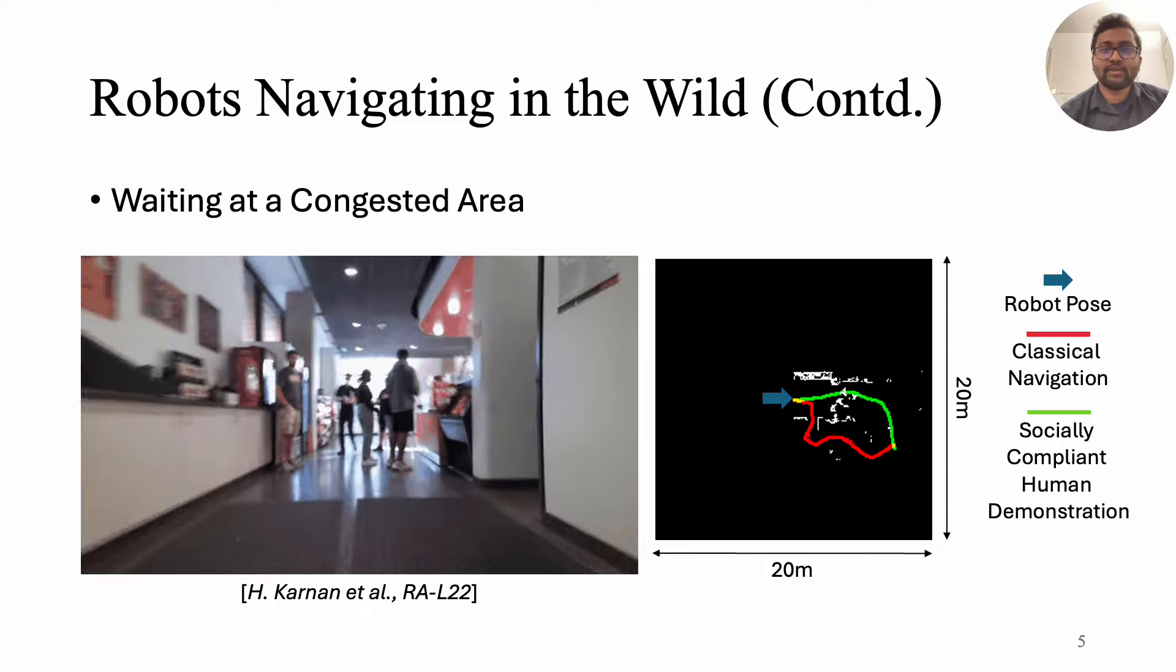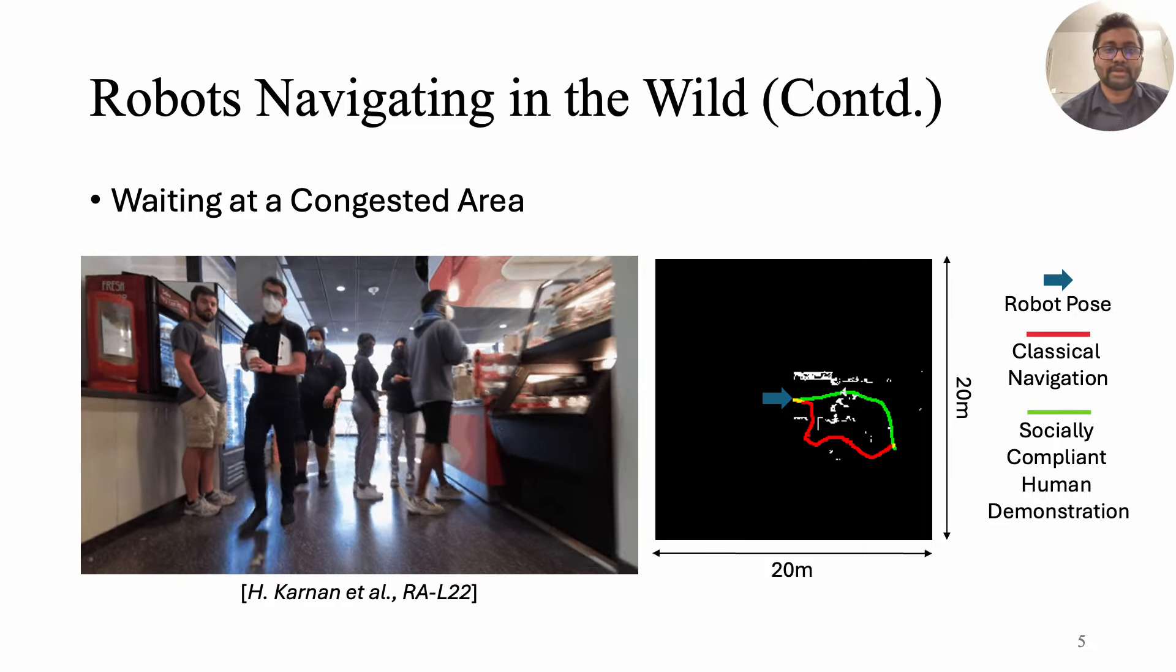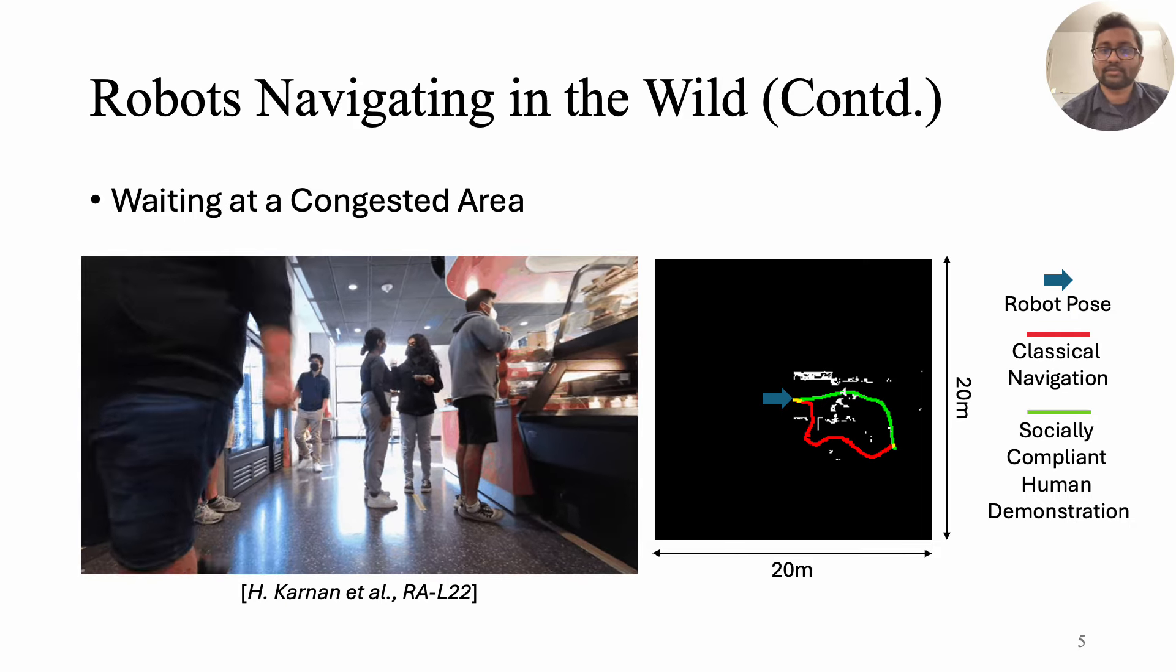In a crowded cafeteria, a human-like strategy means waiting a bit for the space to clear before moving on instead of the traditional system that takes a longer path around the crowd that will soon disperse.